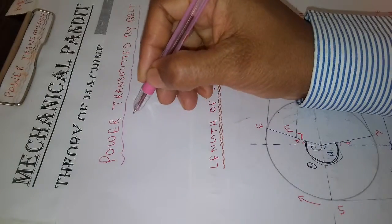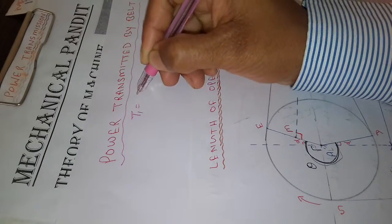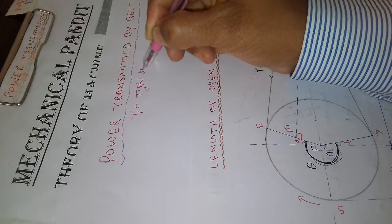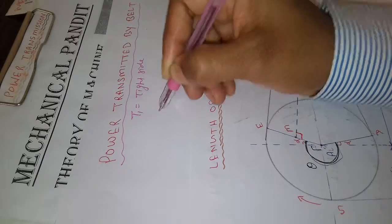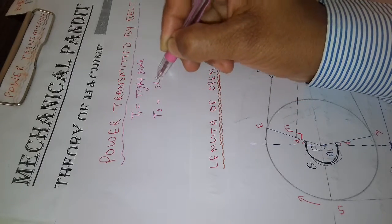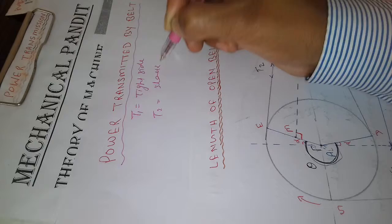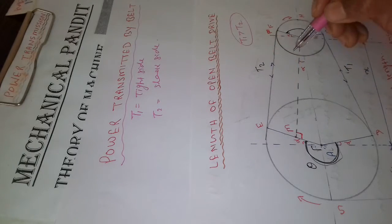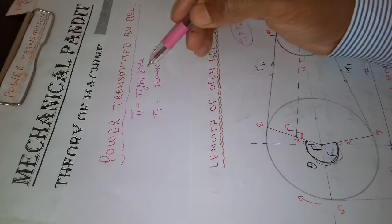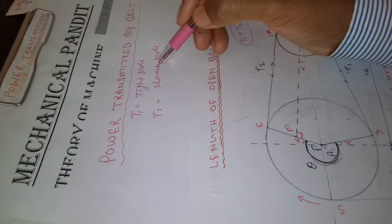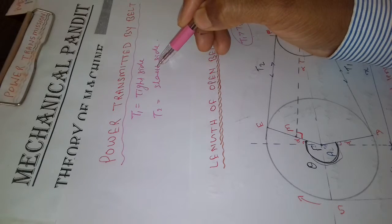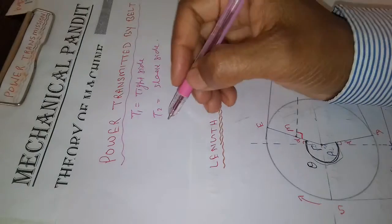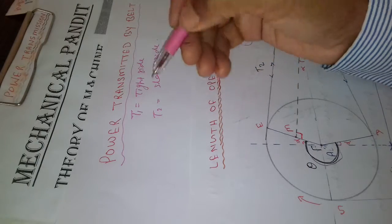T1 is the tight side tension and T2 is the slack side tension. T1 will always be greater than T2. So what will be the power transmitted? Power transmitted is force into velocity.